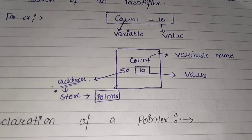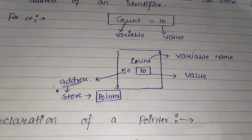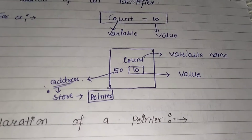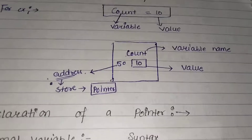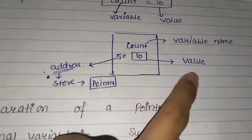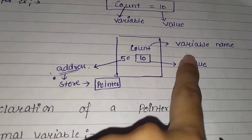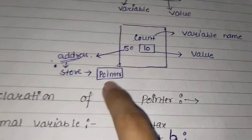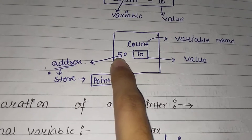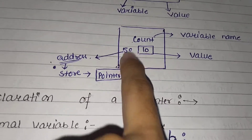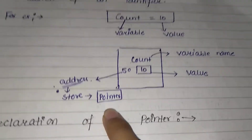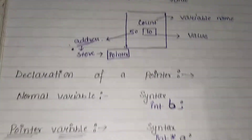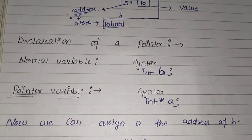Now let's look at an example. If we have a normal variable with a value 10 stored in it, count is a variable which has the value 10 stored. Now the variable which stores an address is a pointer. Here count has value 10 and its address is 50. Now 50 is its address, and the variable that stores this address is the pointer.